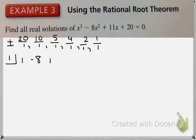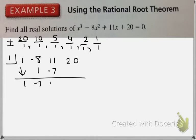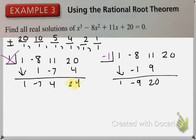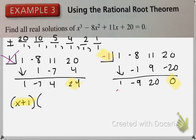We're going to use synthetic division, and remember we're looking for a remainder of 0, because that means it is a zero. So I do 1, negative 7, negative 7, 4, 4, and 24. Since my remainder is not 0, I know that positive 1 is not a factor. So I'm going to try negative 1. Since we have a remainder of 0, we have determined that negative 1 is in fact one of our answers. Since negative 1 is an answer, we know that the factor is x plus 1. What we have left in our polynomial is x squared minus 9x plus 20.